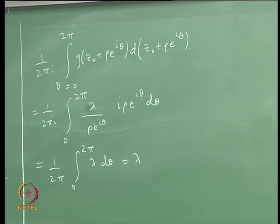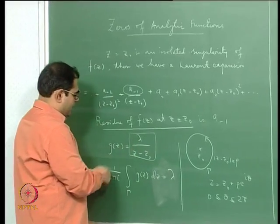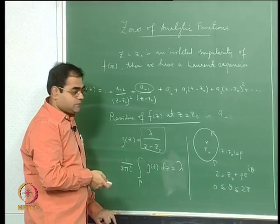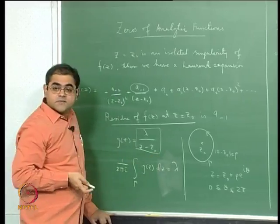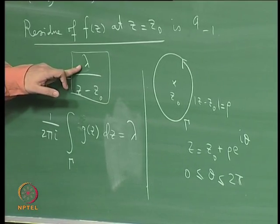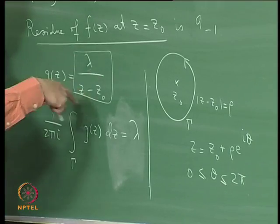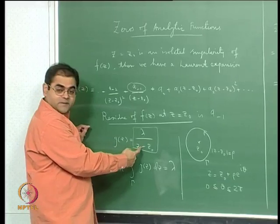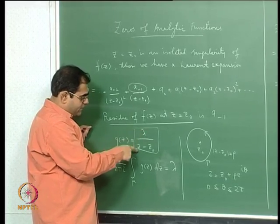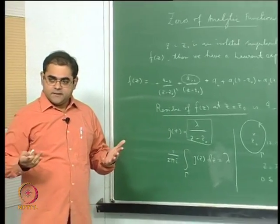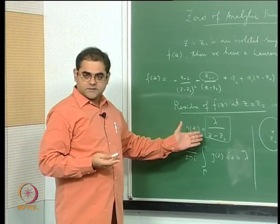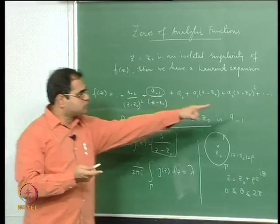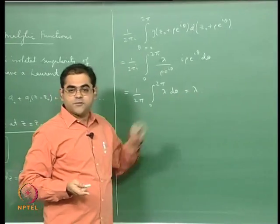The moral of the story is that if you look at this function and integrate it over the small circle surrounding the simple pole, you pick up this coefficient. The Laurent expansion for λ/(z−z0) is already λ/(z−z0), so a_{-1} is λ, and that is what shows up when you calculate (1/2πi) times the integral — that is the residue for the function.